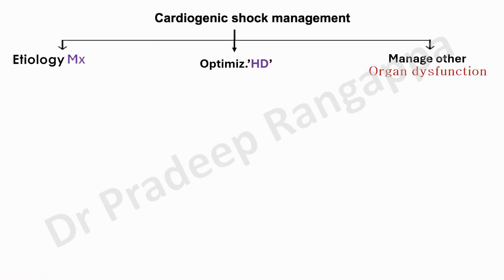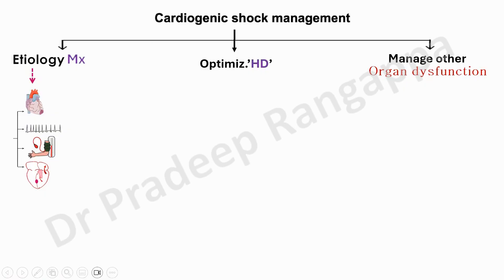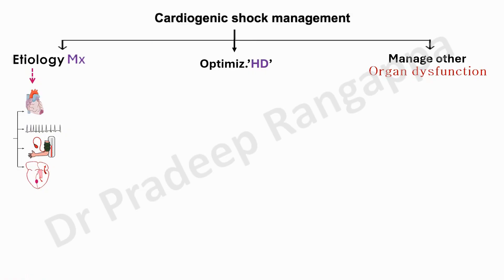The most common cause is ACS — apply ACS principles, involve cardiologists, and perform percutaneous intervention. Other etiologies include arrhythmias such as AF, SVTs, and VTs; hypertensive problems leading to heart failure; and valvular lesions such as severe mitral regurgitation, aortic regurgitation, or septal defects. Etiology falls into four categories: coronary, arrhythmias, hypertension, and valvular problems.